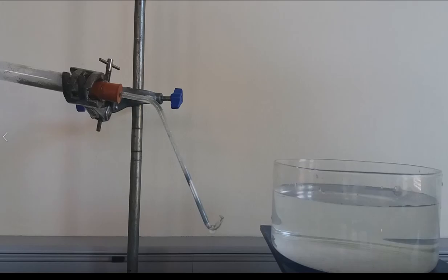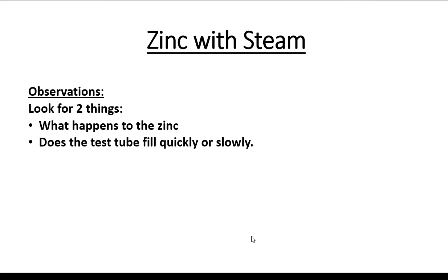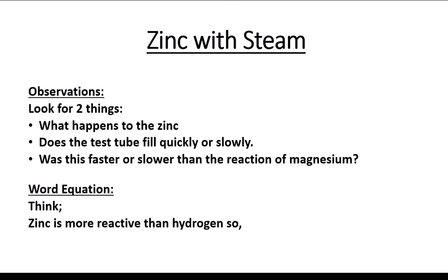So zinc has reacted with hydrogen oxide to give us zinc oxide plus hydrogen. Your observations: what happened to the zinc, did the test tube fill quickly or slowly, and was the reaction generally faster or slower than with magnesium? Think of where zinc sits compared to magnesium in the reactivity series — that'll give you a clue. The word equation: zinc plus hydrogen oxide gives you… complete that on the worksheet, rewinding the video if necessary.